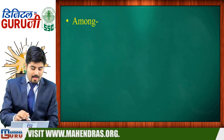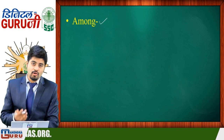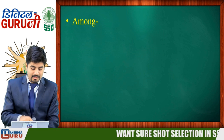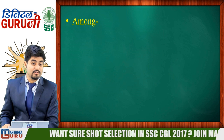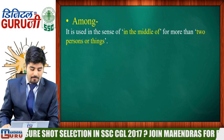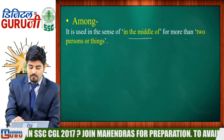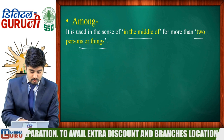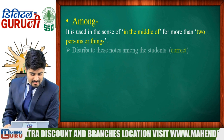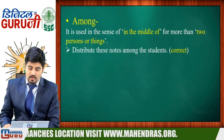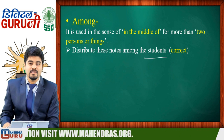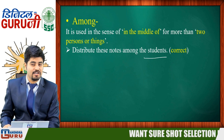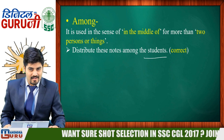'Among' is used in the sense of 'in the middle of' for more than two persons or things. When there are more than two and they are not named individually, we use 'among' in the general condition. For example: 'Distribute these notes among the students' — students refers to more than two, names are not given individually, so 'among' is used.